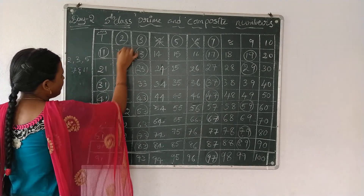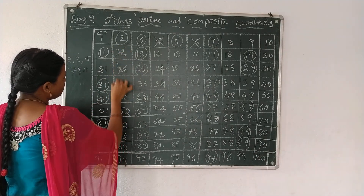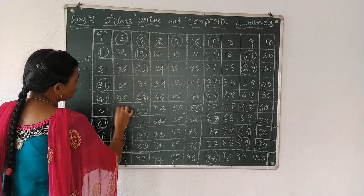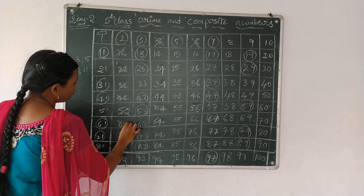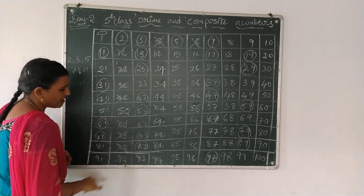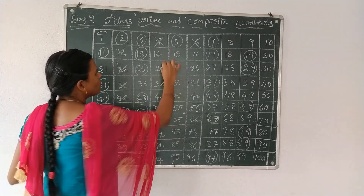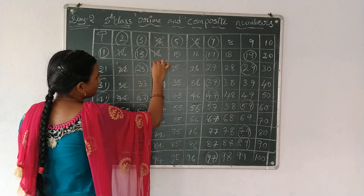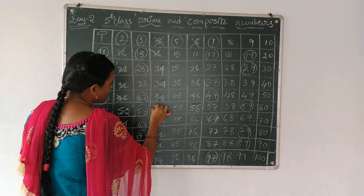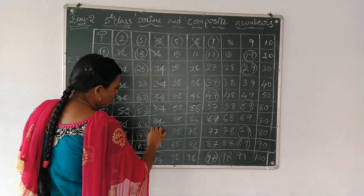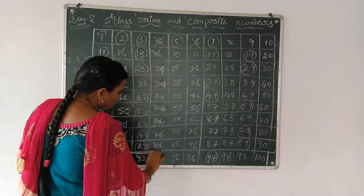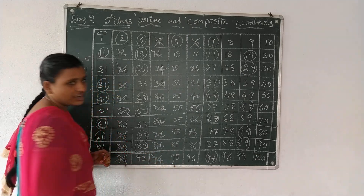Let's do it. Cancel: 12, 22, 32, 42, 52, 62, 72, 82, 92. Then 14, 24, 34, 44, 54, 64, 74, 84, 94.